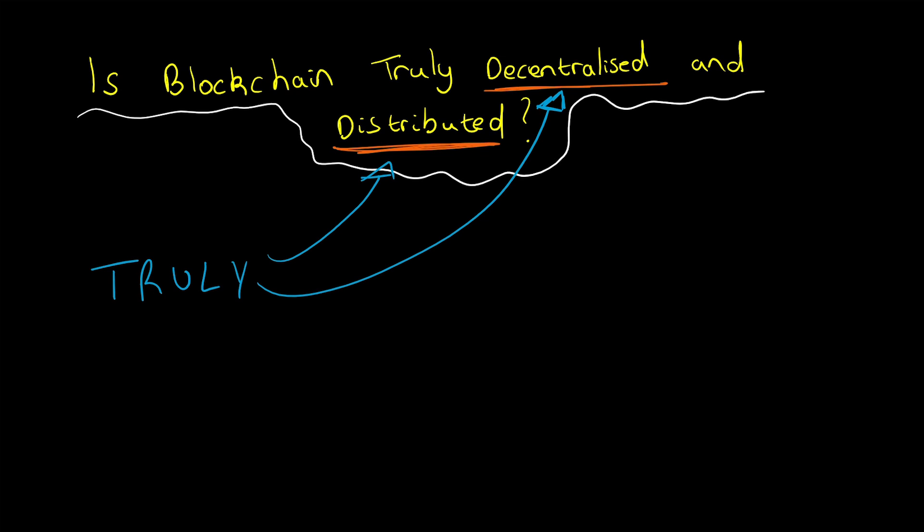Let's talk about the case of Bitcoin, because that is the most popular application. Bitcoin itself is also decentralized and distributed.